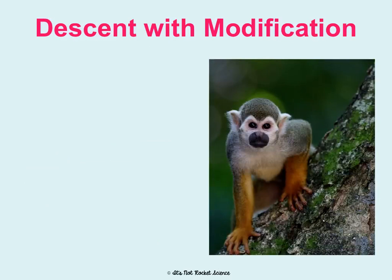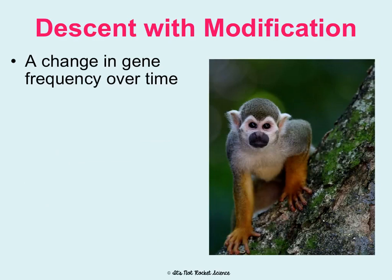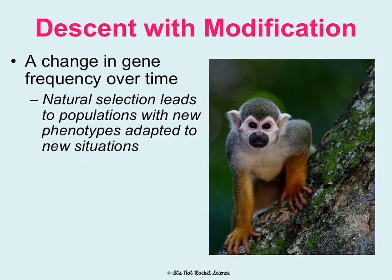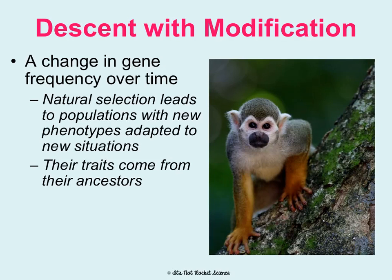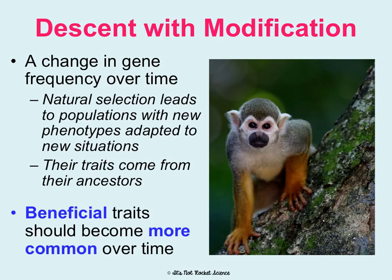Last but not least is descent with modification, which means that gene frequencies can change over time. Looking at how common genes are in the gene pool, that can change over time. Natural selection should lead to populations with new phenotypes adapted to new situations. These new phenotypes tend to come from ancestors, and beneficial traits should become more common over time — meaning descendants can be modified from the ancestors they came from, such as things like opposable thumbs in certain primates. A beneficial trait like an opposable thumb should become more common over time according to the principles of natural selection.